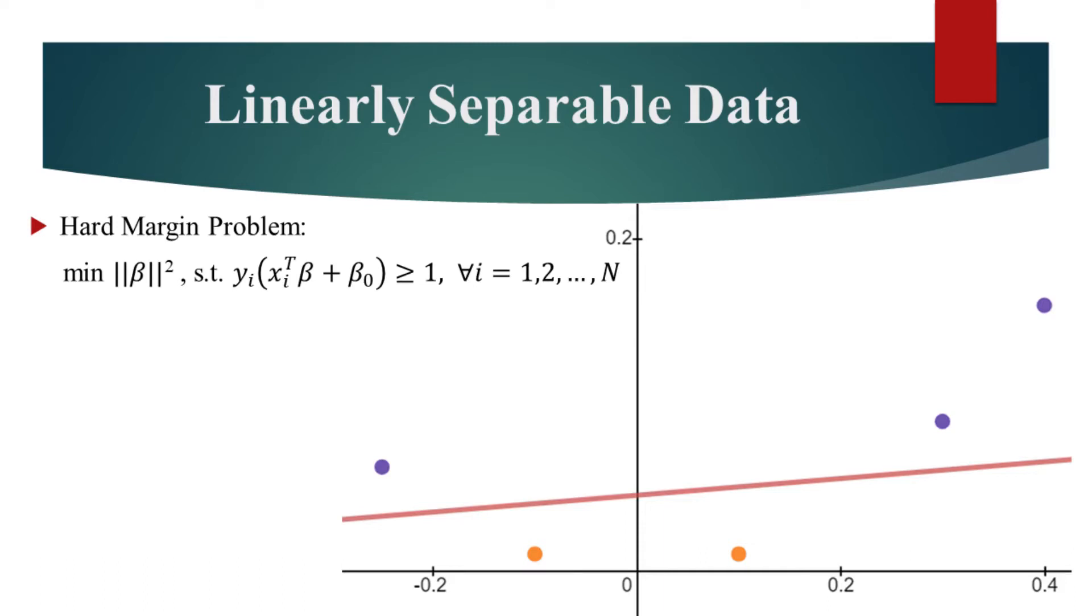The following video assumes familiarity with maximum margin SVM and explains the soft margin SVM. On this graph, the violet and orange data points belong to two separate classes. The data is linearly separable, so it is possible to find a large margin classifier similar to the red line.